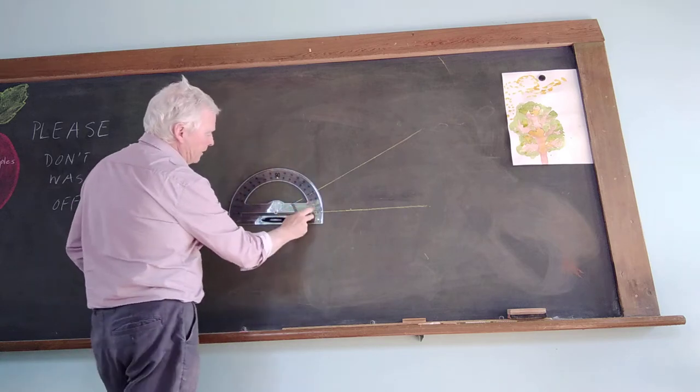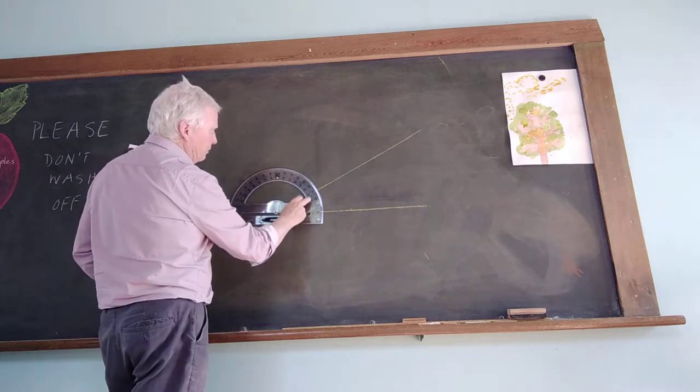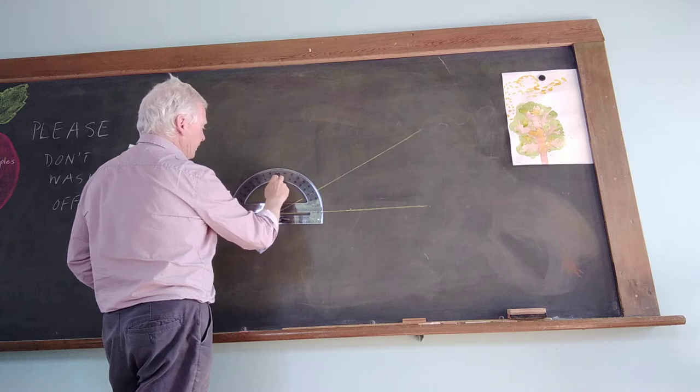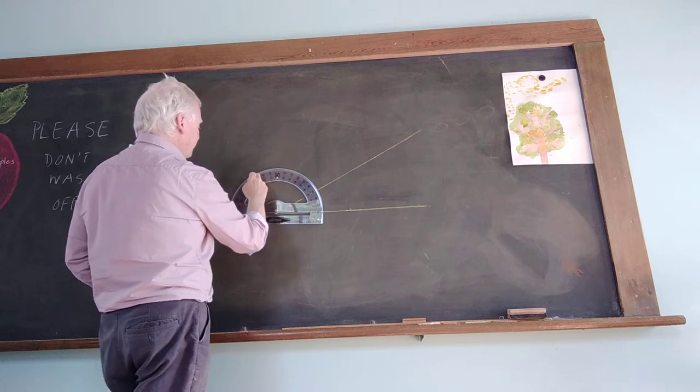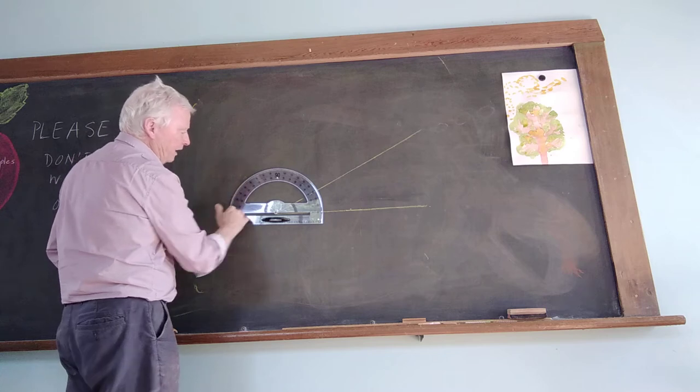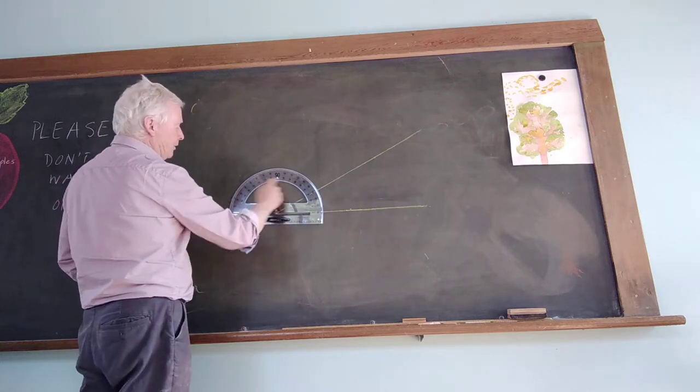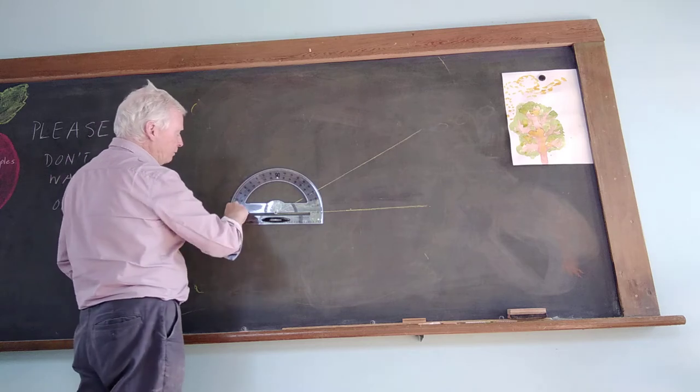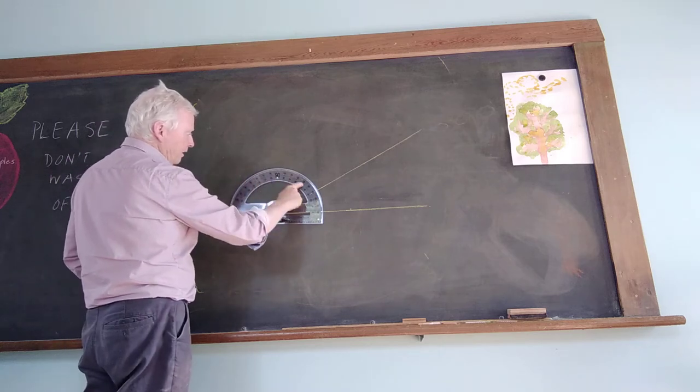Now, there's numbers going 10, 20, 30, 40, 50, 60, 70, 80, 90, 100, 110, 120, 130, 140, 150, 160, 170, 180. Straight line is 180 degrees. But there's also the same thing going this way.